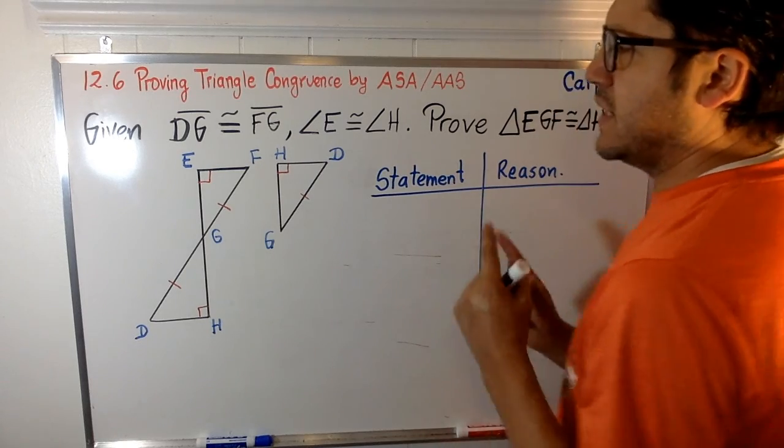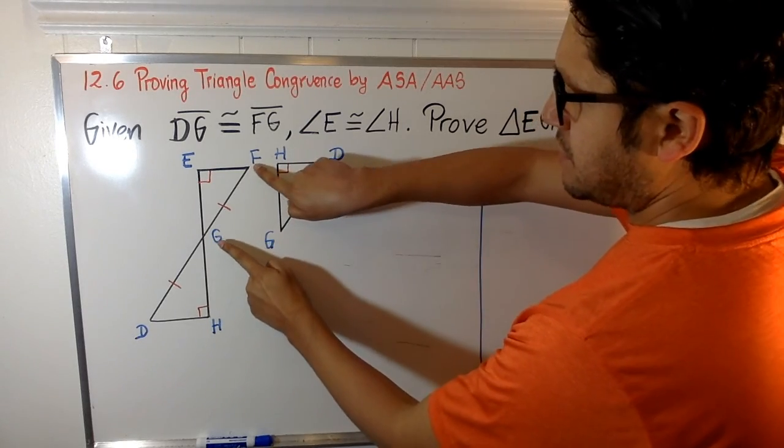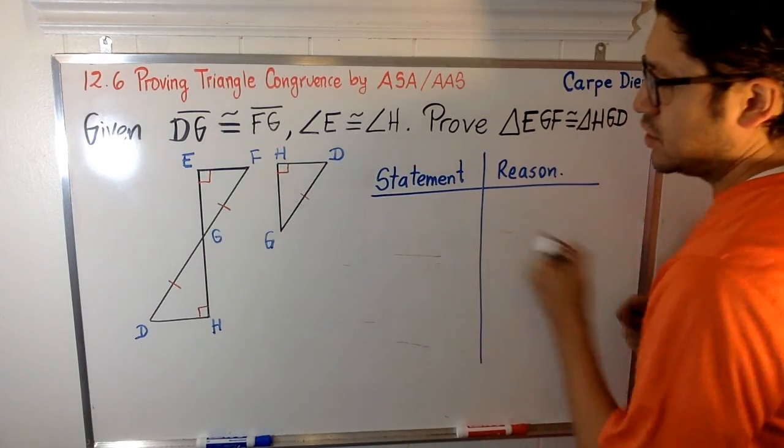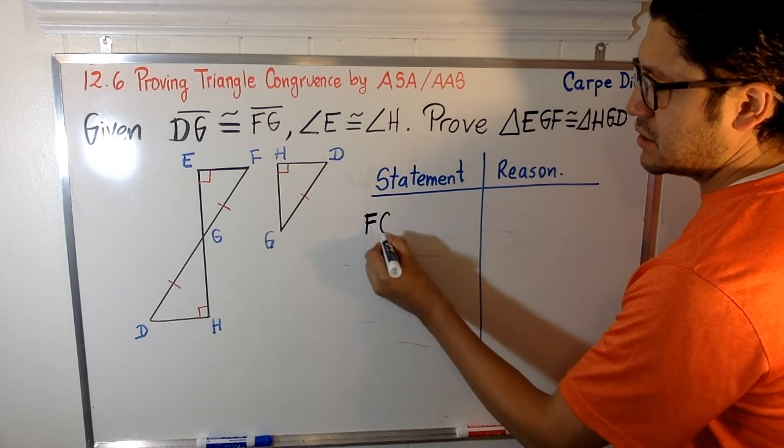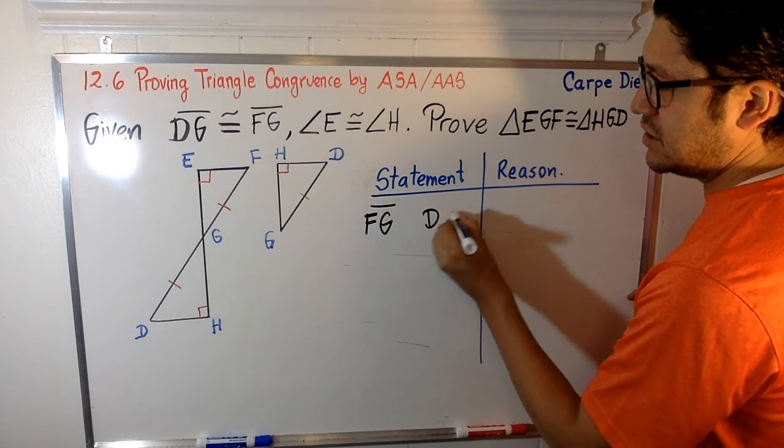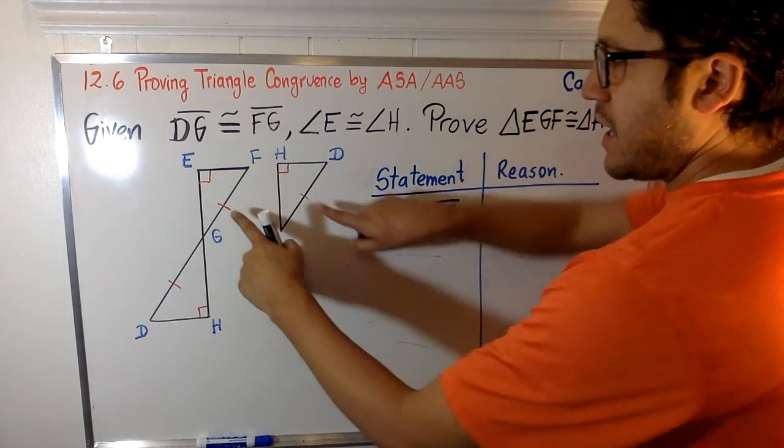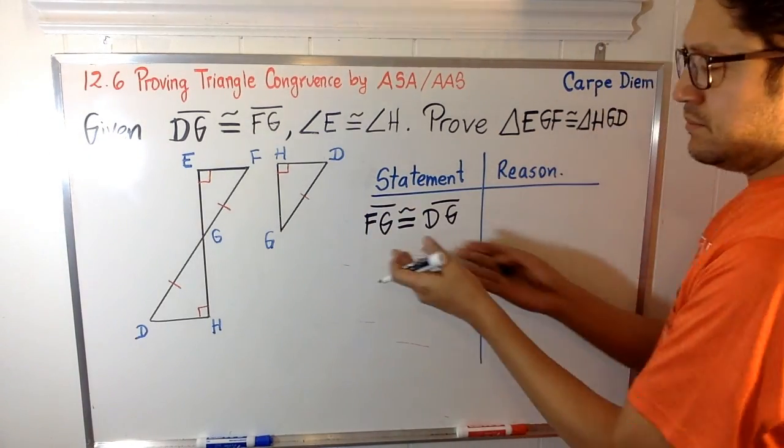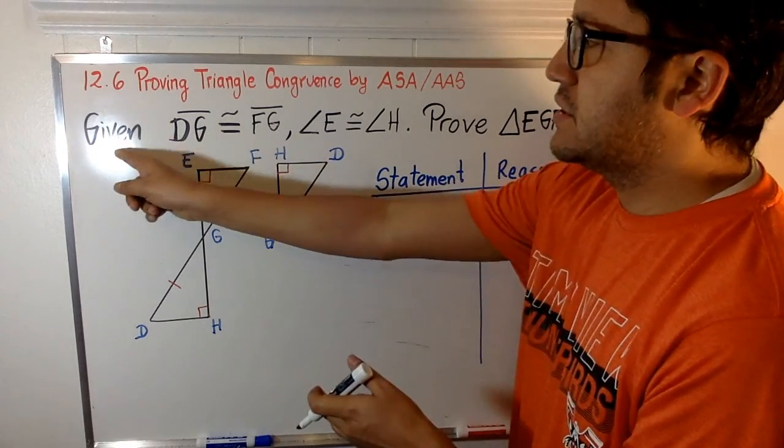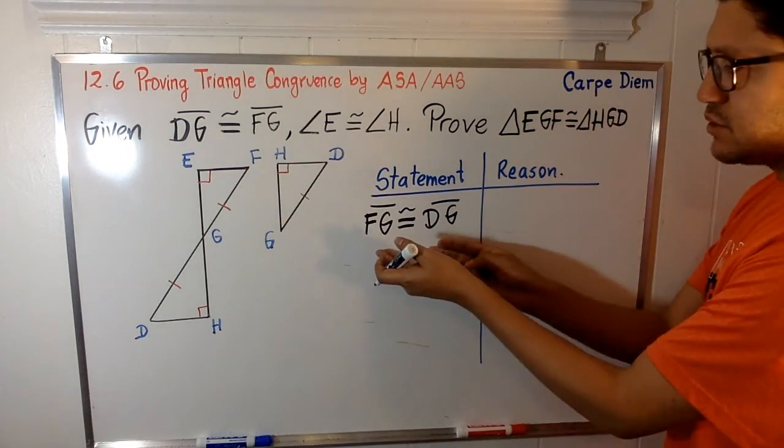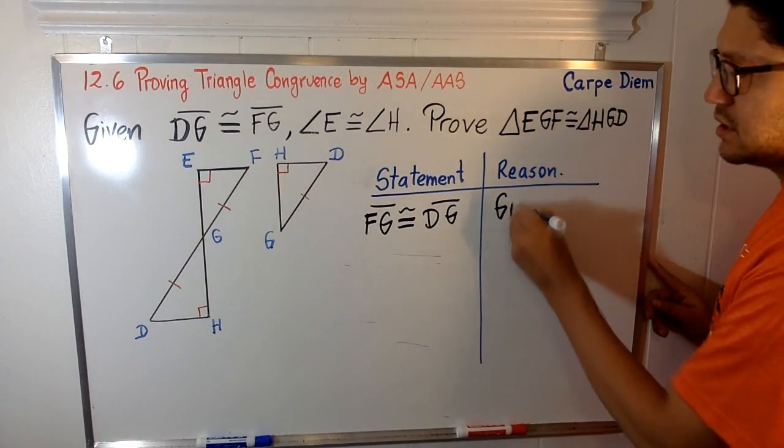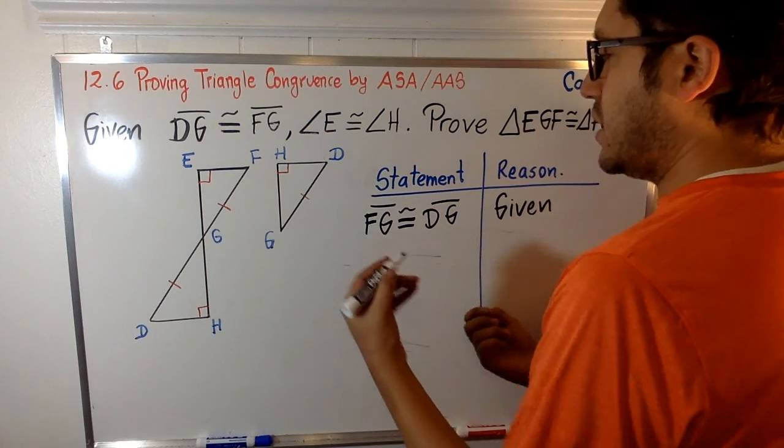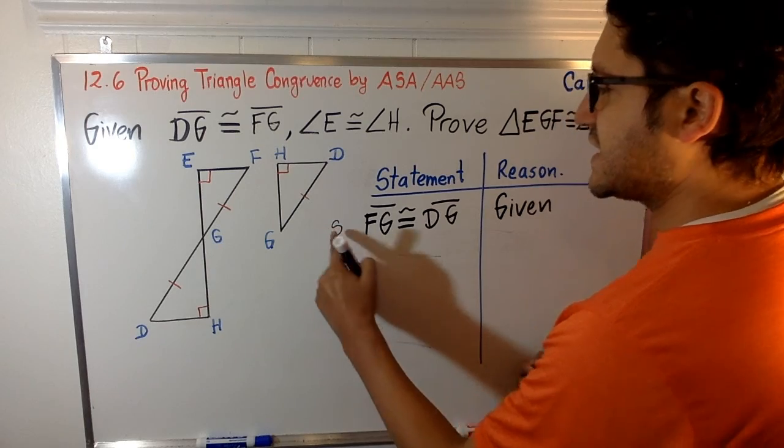We can begin by stating the following. Can you see these two segments? We have FG and DG. So FG and DG happen to be congruent, okay? And why can I say that? It's because it's part of the given. So the reason why I can say that is because it was a given, okay? So we can begin with something. We can begin with a segment, okay?